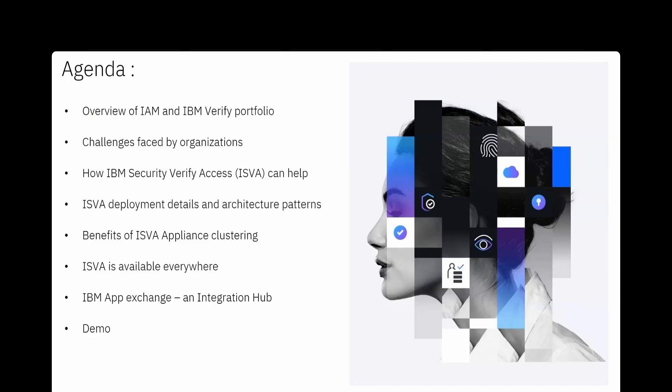The agenda for today is to give a brief context about what IAM is and IBM's suite of different products — the Verify portfolio — so we'll make you aware of all the different services provided by different products to address business needs around IAM. Then we'll cover the major challenges faced by organizations without a mature identity and access management solution, and go deep into the product level to discuss how ISVA — IBM Security Verify Access — can help mitigate those challenges, along with its different components and architecture patterns.